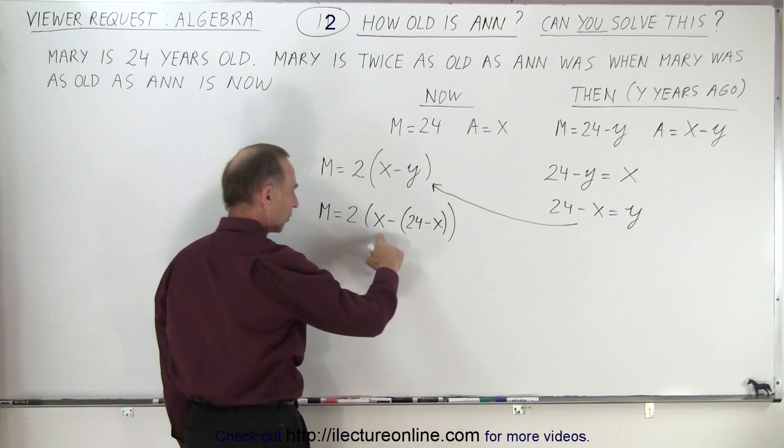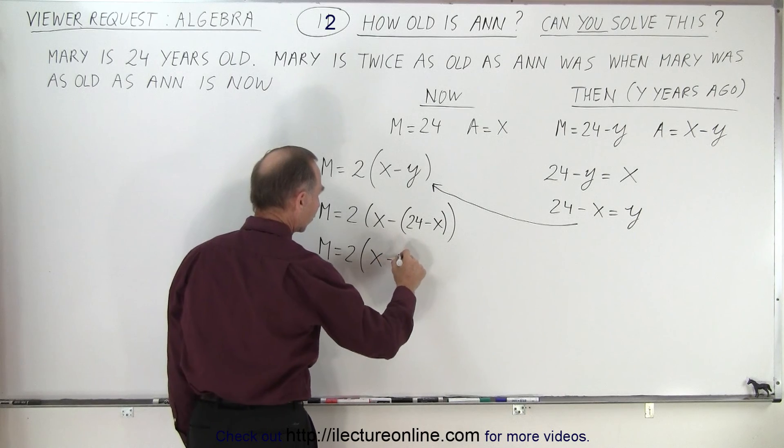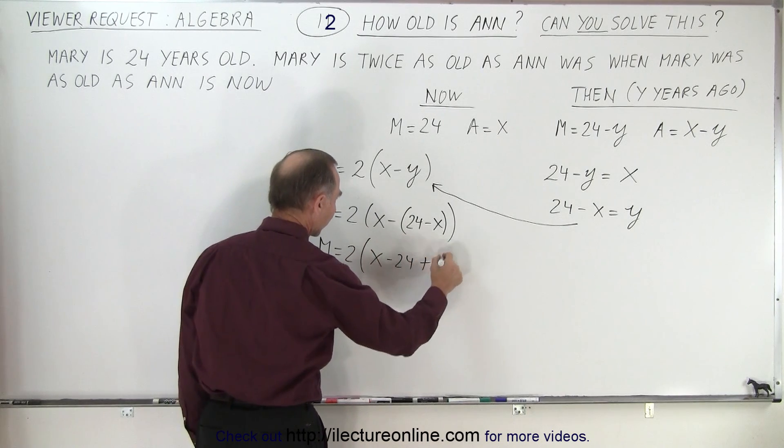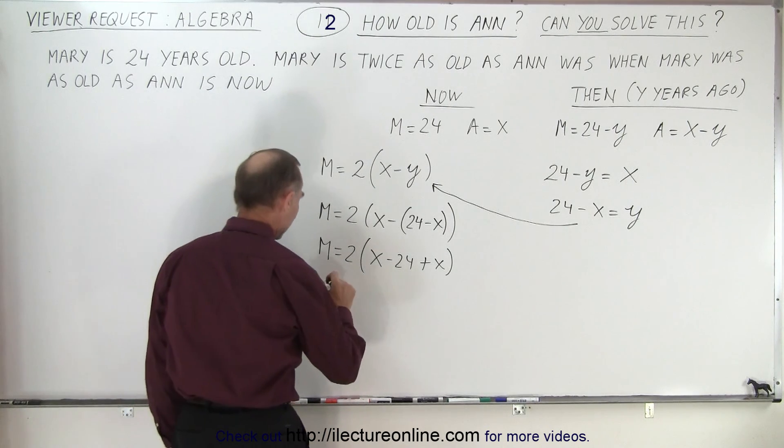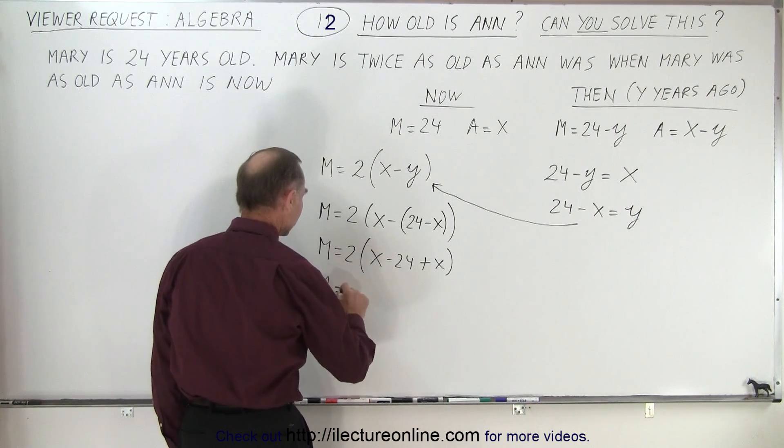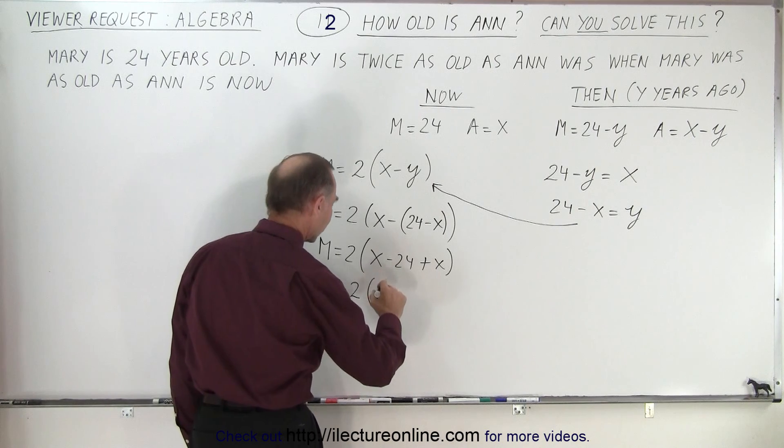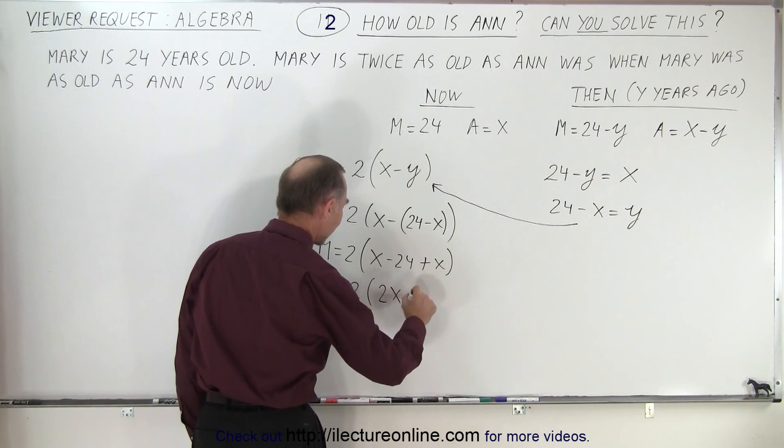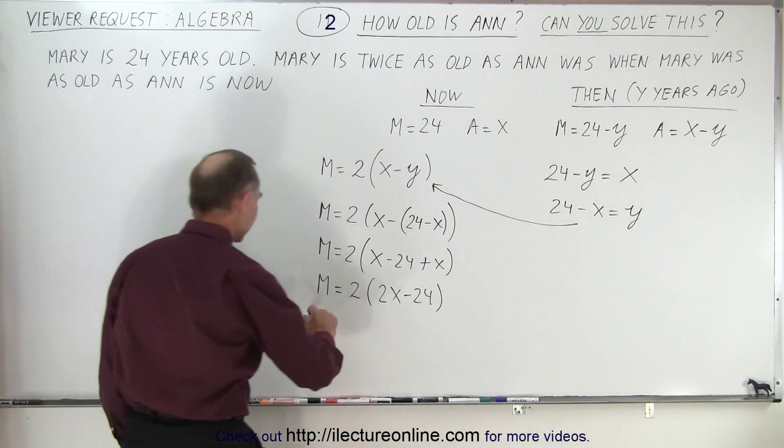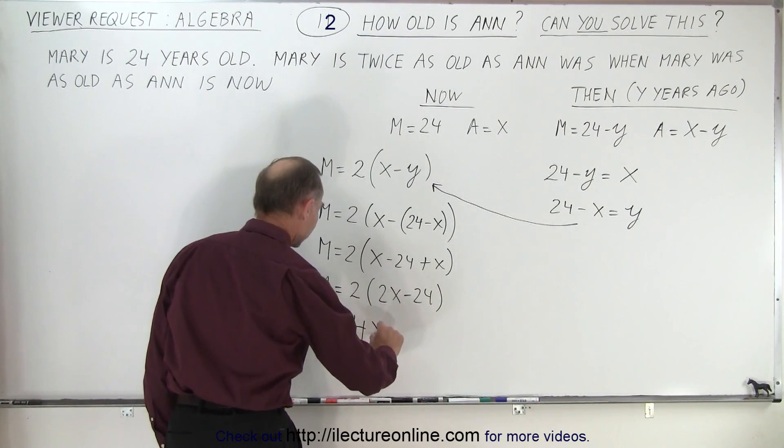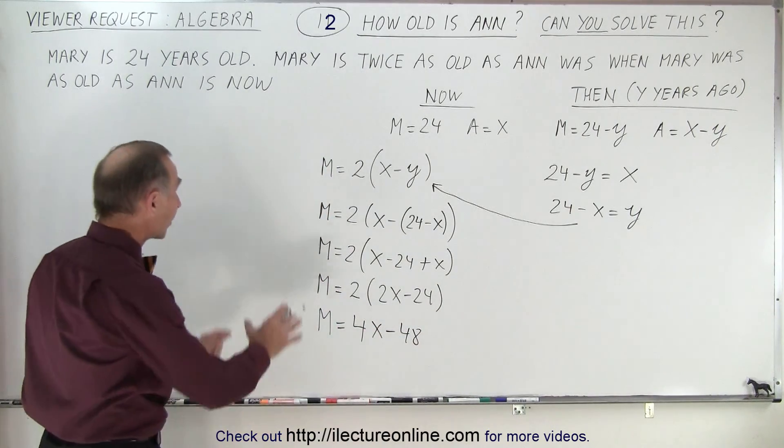So first we solve what's inside the parentheses so we have M is equal to 2 times X minus 24 and minus times minus is plus X. All right, then solving for that we get Mary is equal to 2 times, so we have 2X minus 24, so that means that Mary is equal to 4X minus 48. So that is the age of Mary today.